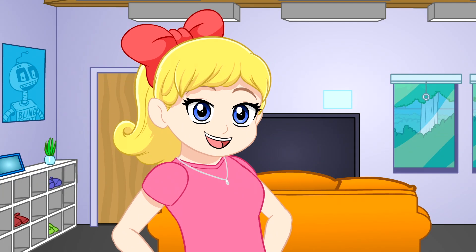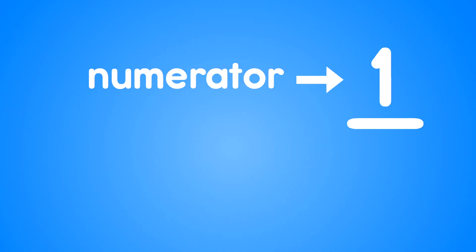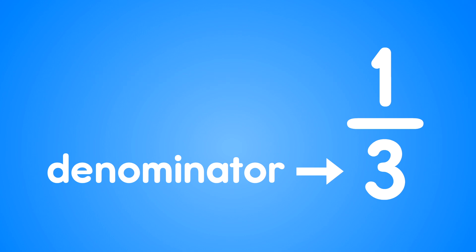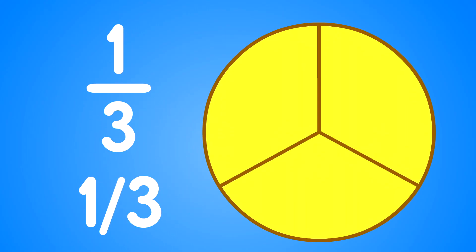A fraction is a way of writing the part or parts of a thing or set. All fractions have a numerator and a denominator. The denominator is the number written under the bar or after the slanted line — it tells you how many equal parts the thing or set is divided into. The numerator is the number written on top of the bar or before the slanted line, and it tells you the number of parts you are observing.